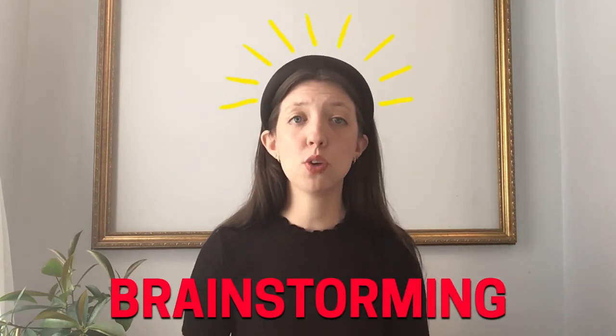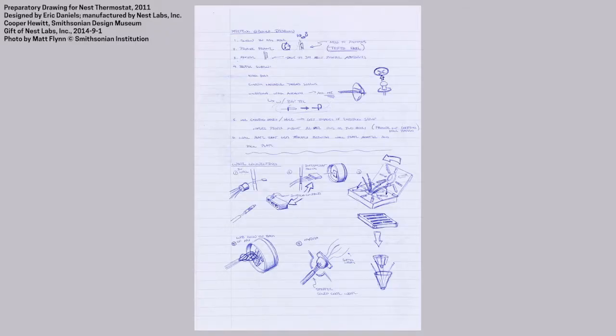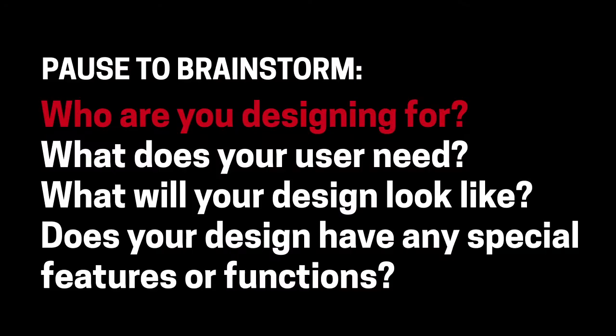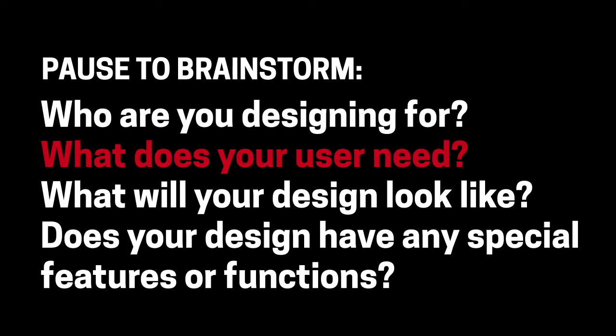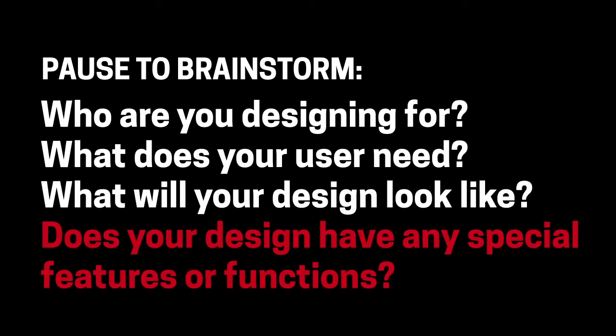Now that you have your design challenge, it's time to start designing. The next step in your design process will be brainstorming — coming up with as many ideas as possible. Go crazy and don't limit yourself. You can brainstorm by drawing pictures, writing down lists, or just talking it out. Take a moment and come up with as many ideas as you can to solve your design challenge. Consider: Who are you designing for? What does your user need? What will your design look like? Does your design have any special features or functions?